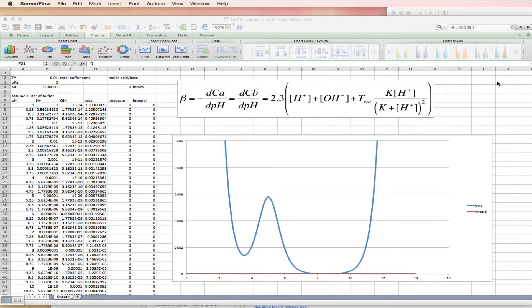As a practical matter in working with buffers, it's important to recognize that not all buffers are equally effective at buffering the solution from changes in pH. So to begin this discussion, let's talk about the equation for buffer capacity, which we'll denote as beta.